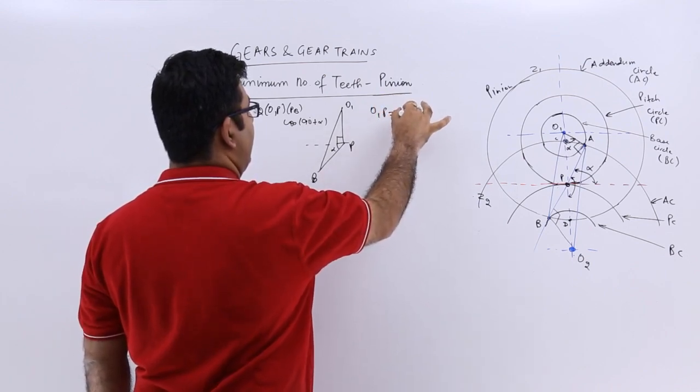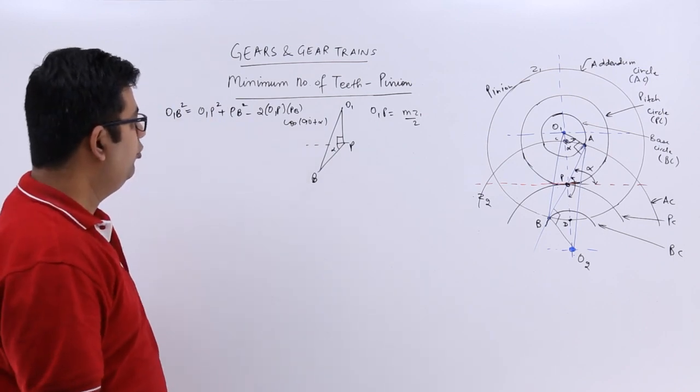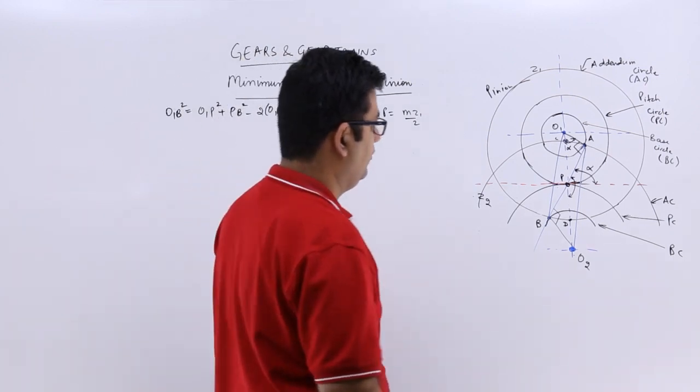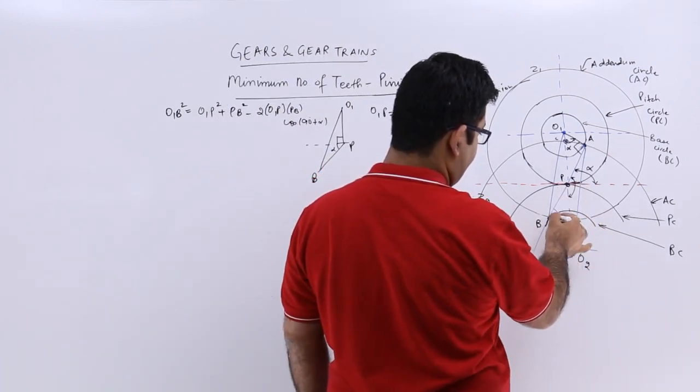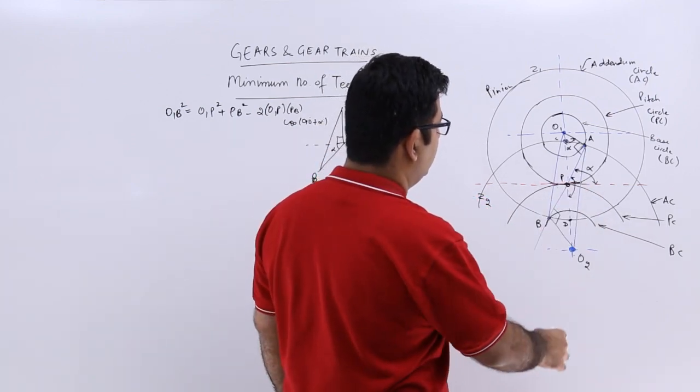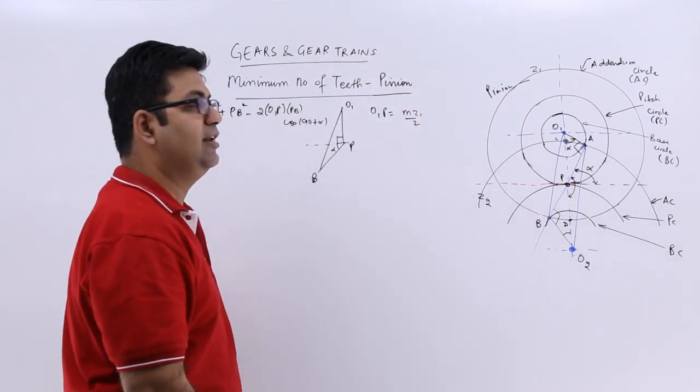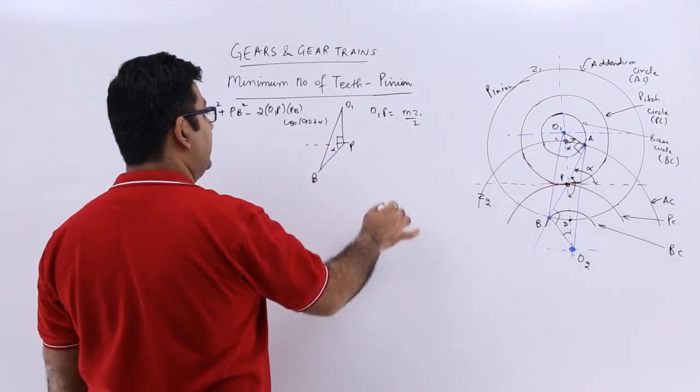O₁P is m·z₁/2. If you look at BP, this is also alpha, so it is O₂P times sin α, which becomes O₂P·sin α = m·z₂/2·sin α.